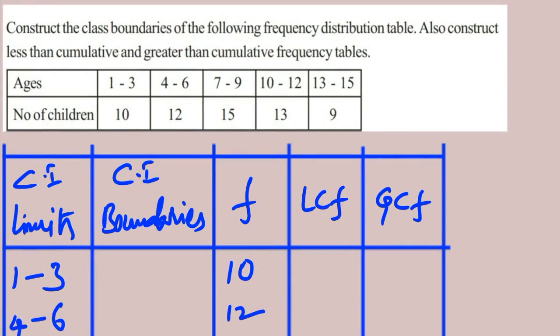Hello, hi everyone, this is Ganesh. In this video I am going to explain about grouped frequency distribution tables. This is a very important topic. If we know the limits of the class intervals, how can we convert them into boundaries of the class intervals? At the same time, if we know the frequencies, how can we convert them into less than cumulative frequencies (LCF) and greater than cumulative frequencies (GCF)?